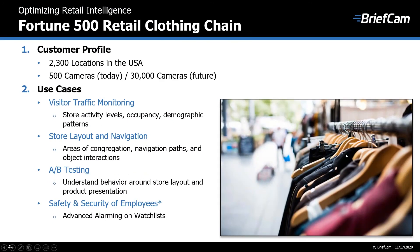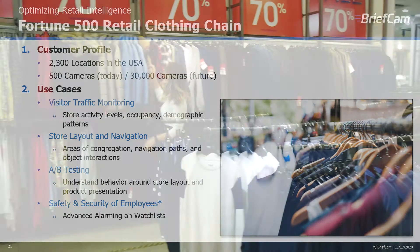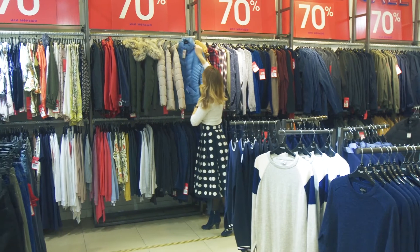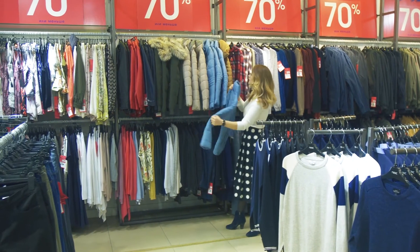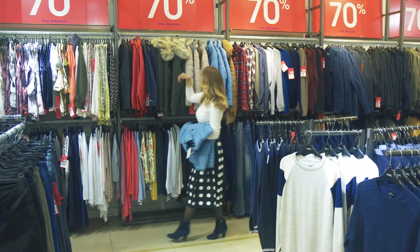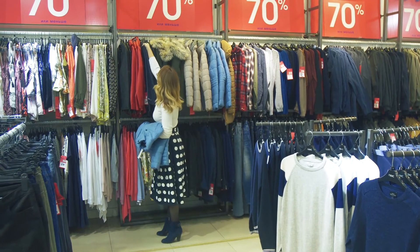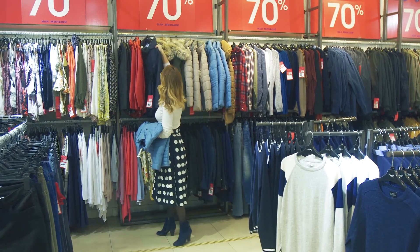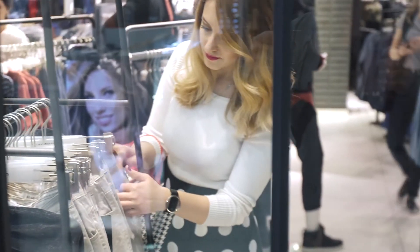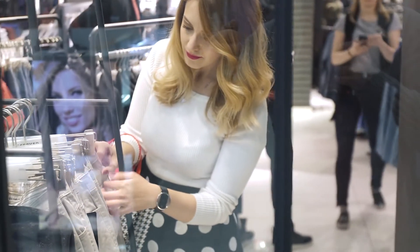From a more traditional sense, we're talking about a Fortune 500 retail clothing chain — 2,300 locations around the U.S., currently analyzing 500 cameras but growing to 30,000 in the near future. In this case, we're monitoring visitor traffic: store activity levels, store occupancy, demographic patterns, and understanding the store layout and navigation. What are those areas of congregation? What paths are people taking most commonly?